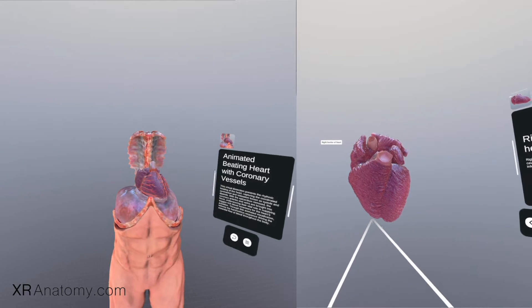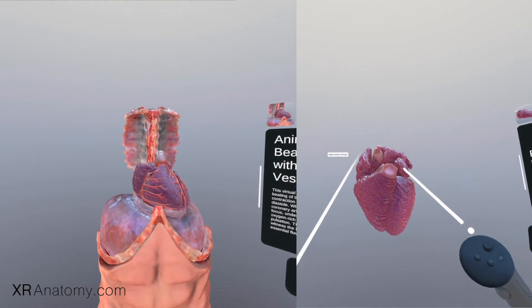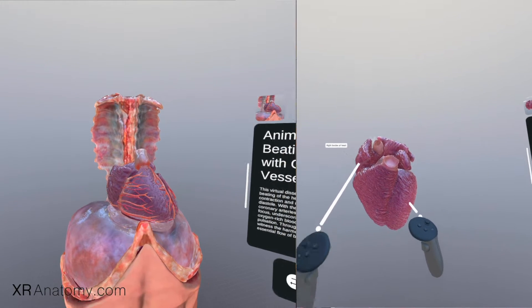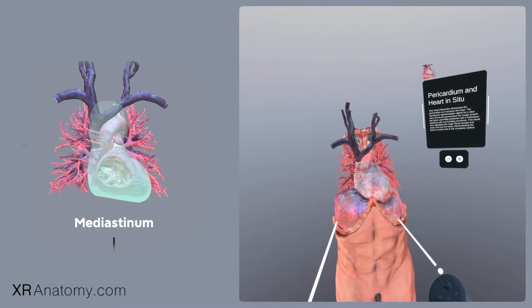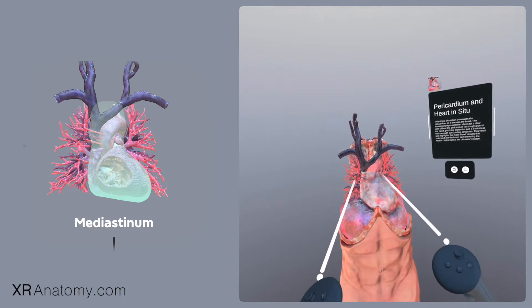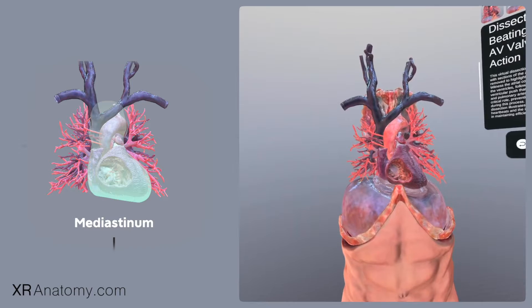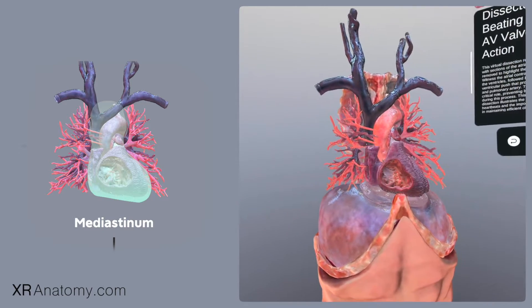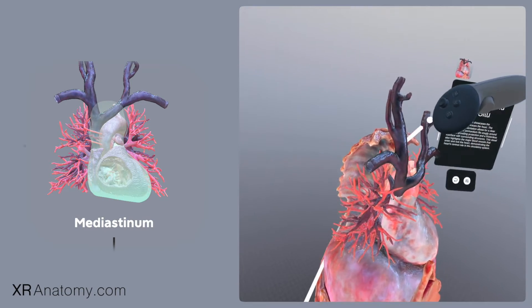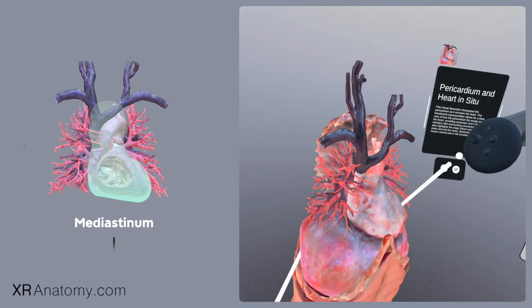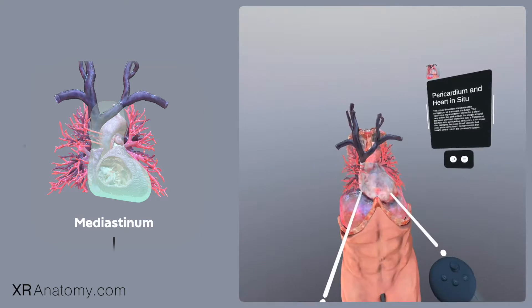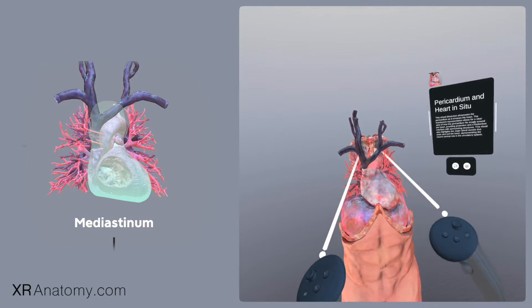Correcting this misconception is vital for accurately understanding heart anatomy. Positioned within the thoracic cavity, the heart rests between the lungs, seated atop the diaphragm in the middle mediastinum. The mediastinum is defined as the anatomical region located in the central part of the chest between the lungs.